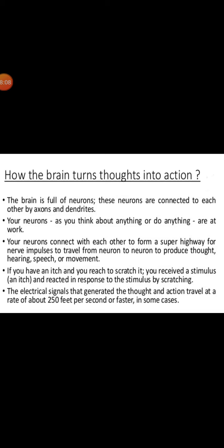Now let us see how the brain turns thoughts into action. The brain is full of neurons and these neurons are connected to each other by axons and dendrites. The neurons, as you think about anything or do anything, are at work and neurons connect with each other to form a super highway for nerve impulses to travel from neuron to neuron to produce thought, hearing, speech and movement. For example, if you have an itch and you reach to scratch it, you received the stimulus and reacted in response to the stimulus by scratching. The electrical signals that generated the thought and action travel at a rate of about 250 feet per second or faster in some cases.